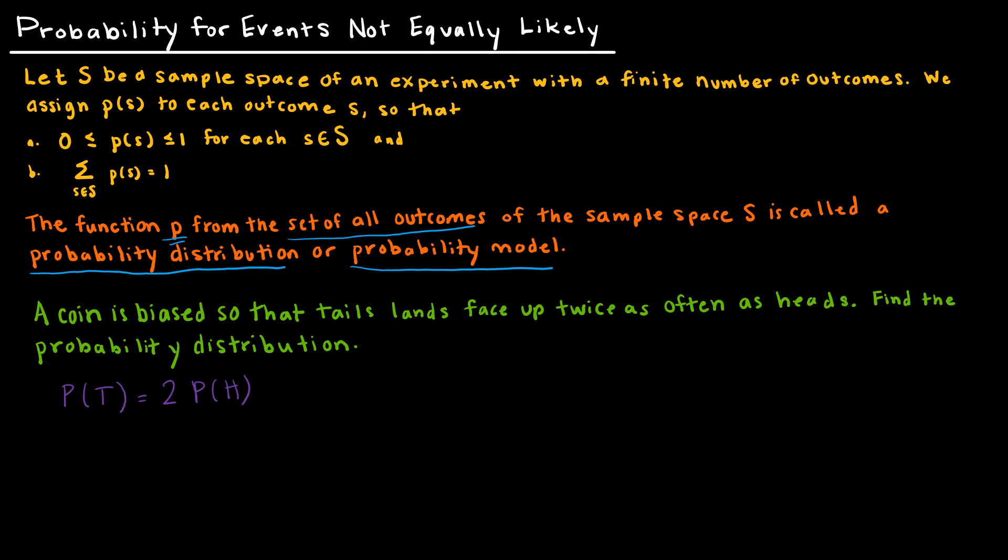I know that this all adds up to 1, so the probability of heads plus the probability of tails must add up to 1, because those are the only two items in the sample space. If probability of tails is actually 2 times the probability of heads, then I can say that 1 equals the probability of 3 heads. So obviously the probability of heads is 1/3, which means the probability of tails is 2/3.